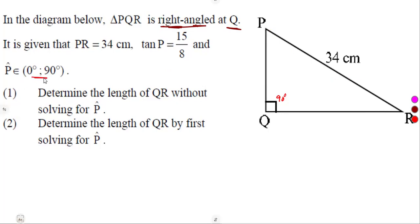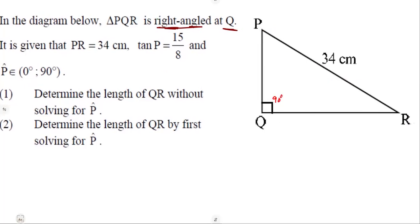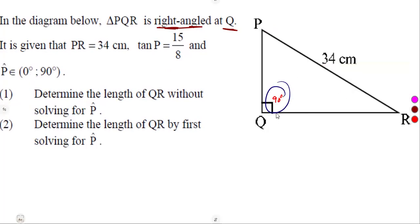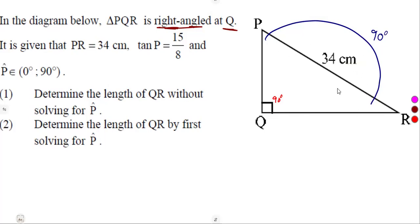Remember, when working with a right-angled triangle, if one angle is 90 degrees, the remaining two angles must add up to 90 degrees. This means the remaining angles are in between 0 and 90 degrees — they cannot be 0 degrees and cannot be 90 degrees, but any angle in between. That is the concept given here.